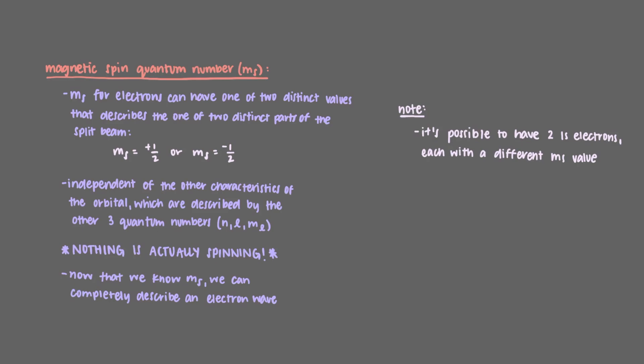But these m sub s values, though they are called the magnetic spin quantum number, do not actually mean that anything is spinning. That's just not true. All that is different about these 1s electrons is that they have different values of m sub s, a fundamental property of the electron wave.